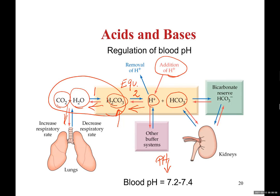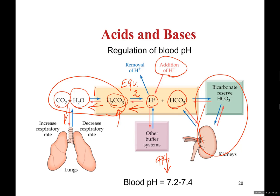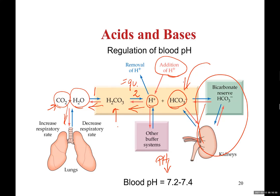There is a bicarbonate reserve here. Bicarbonate is needed to react with excess hydrogen ion to make carbonic acid, which will then be converted to carbon dioxide. So this bicarbonate reserve system delivers the bicarbonate when it is needed to react with excess hydrogen ion. The purpose of this slide is simply to show you that acids and bases are extremely important in chemical reactions and living systems.